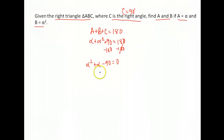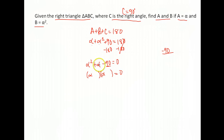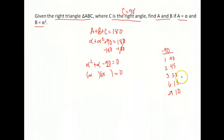These are just like X's. We try to factor: we need two numbers that multiply to negative 90 and add to positive 1. Factors of 90: 1 and 90, 2 and 45, 3 and 30, 6 and 15, 9 and 10. Negative 9 and positive 10 multiply to negative 90 and add to positive 1. So our factors are (alpha minus 9)(alpha plus 10).